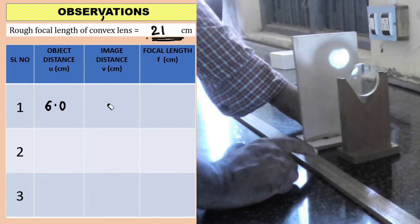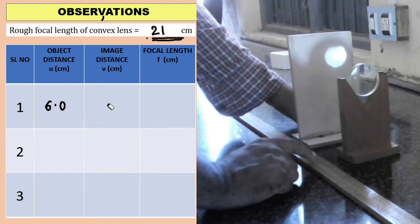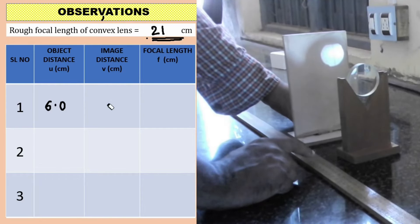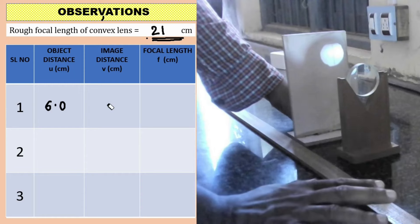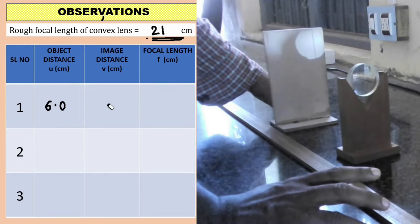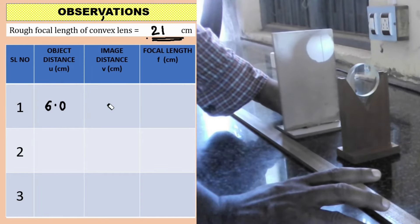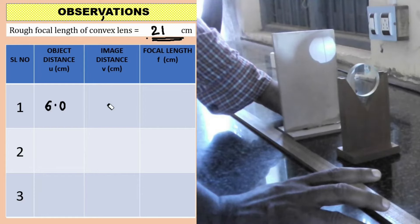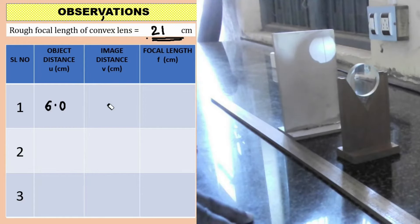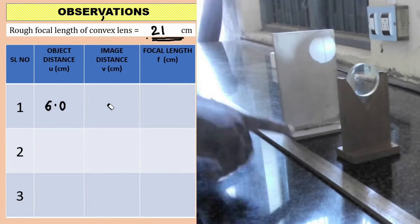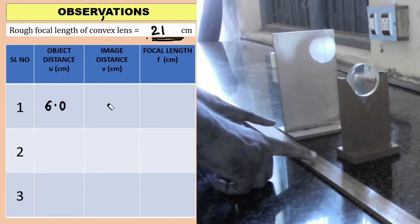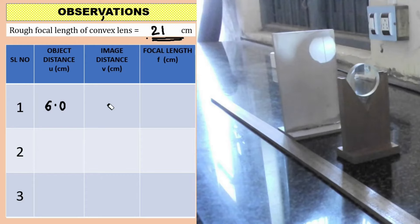You can observe the clarity increasing as the screen moves. Slowly moving the screen, the image becomes clearer, then blurs again after the maximum clarity position. The image distance is calculated as approximately 56 minus 39.4, so the image distance is equal to 16.6 centimeters.